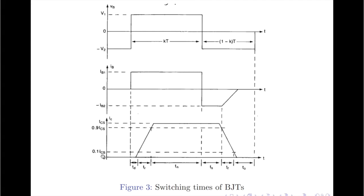Once the base-to-emitter junction is forward biased, which happens after the delay time period ends, the collector current starts to rise. The collector current takes a time duration defined by tr to reach 90 percent of its steady state value, represented by 0.9 ICs. This rise time depends upon the time constant defined by the input capacitances.